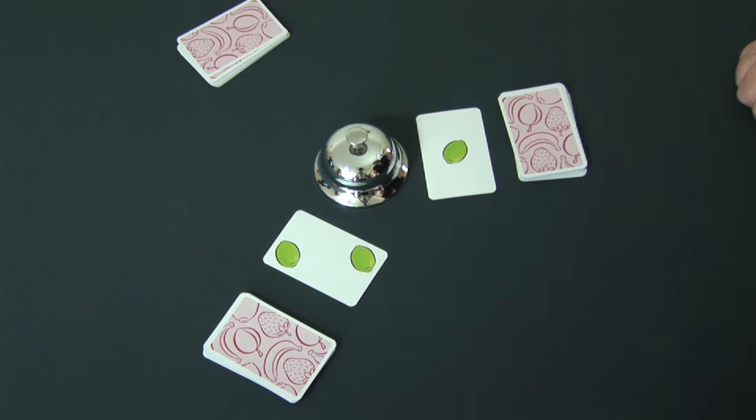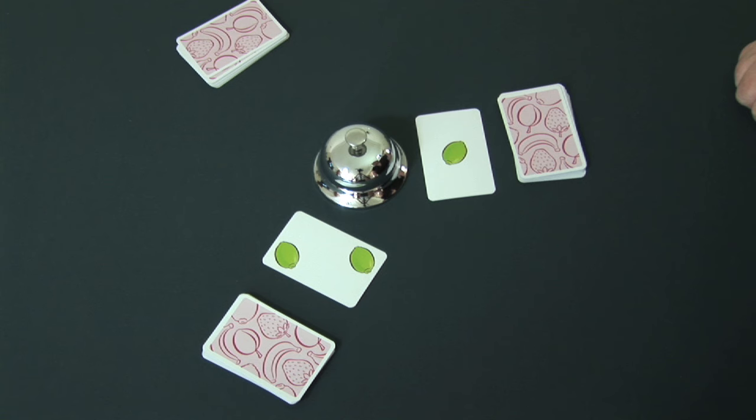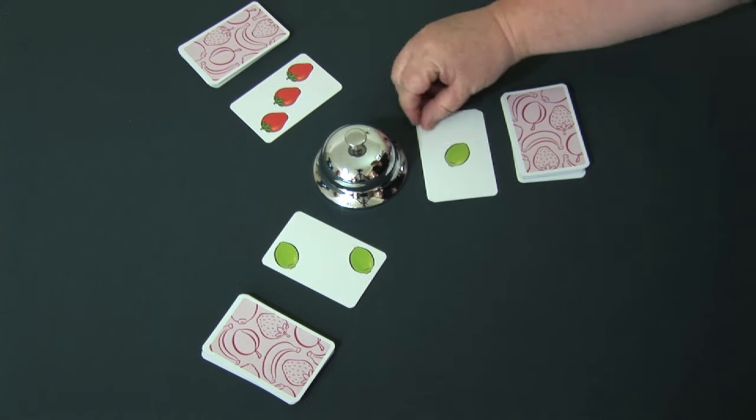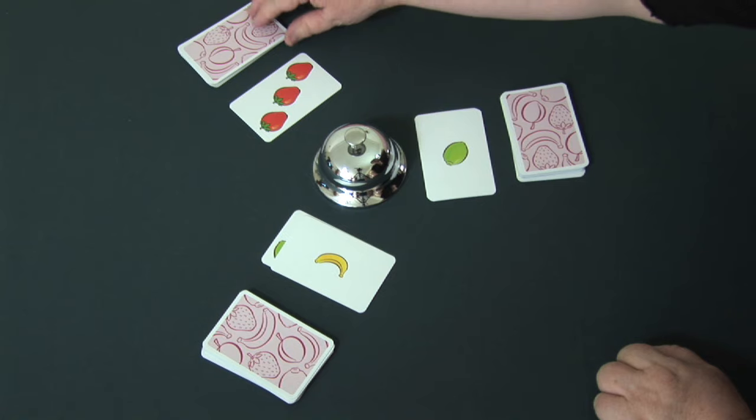What you're looking for is five of the same type of fruit. Cards keep getting turned over until somebody sees something that adds up to five for the same type of fruit.